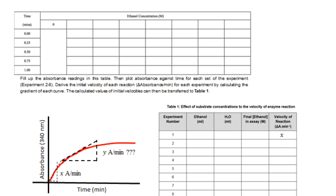Once you are done with your experiment you can transfer the data to the first table at the top. From this table you can calculate the initial velocities for tube number two all the way to tube number eight. With the initial velocities recorded in table number one at the bottom, you can then proceed with plotting the Michaelis-Menten curve.